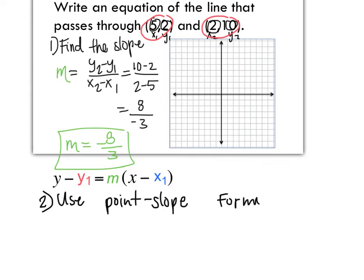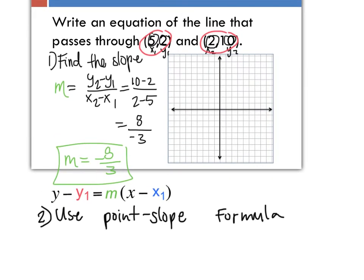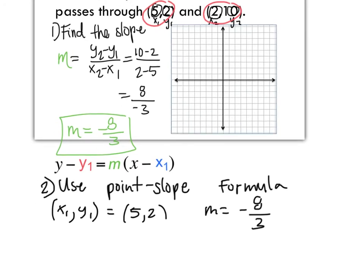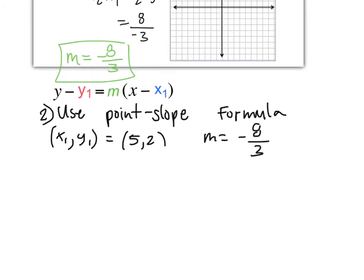The cool thing about this is that we have options now. Everyone loves options. We have two points, 5 comma 2 and 2 comma 10, so we can actually use either one of them. I personally like number five, so I'm going to use the first point. I'm going to say x1, y1 equals 5 comma 2. And from before we know that the slope equals negative 8 over 3. So what do we do? We do the same thing as in the last video, just plug everything in.